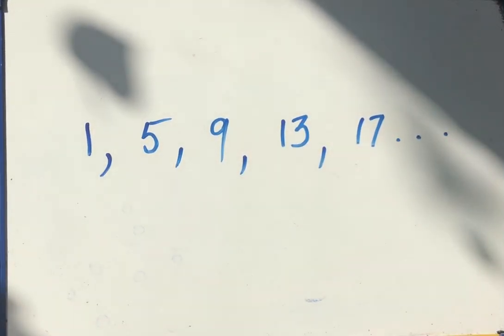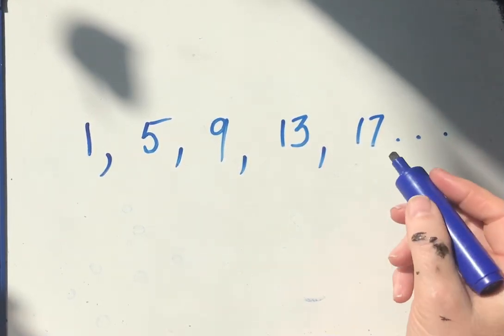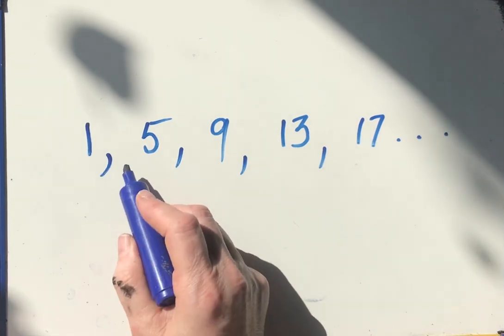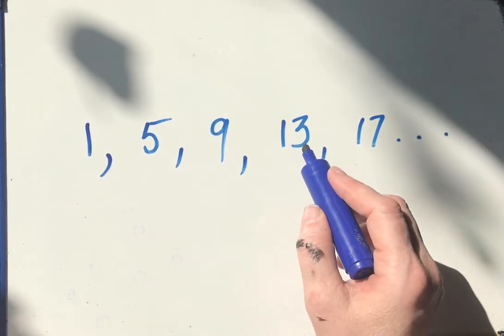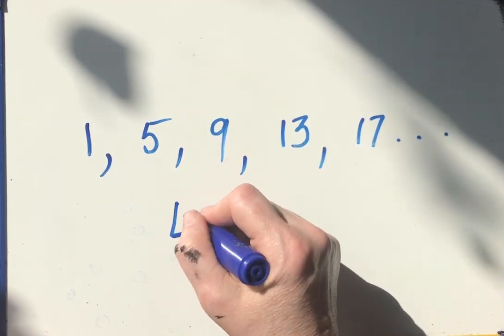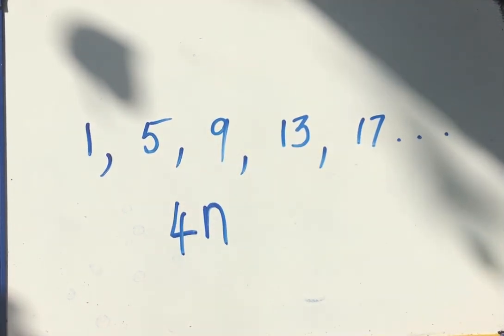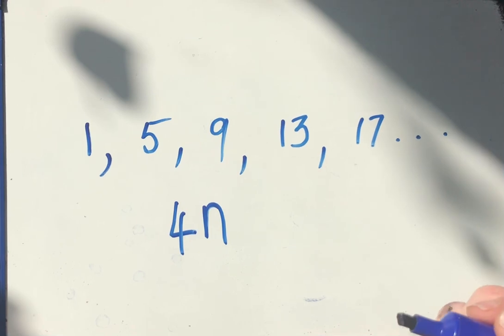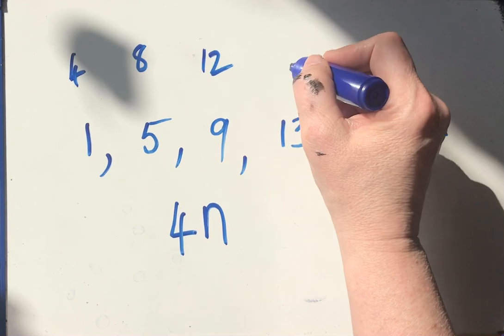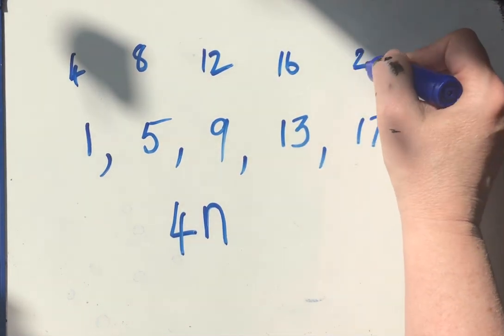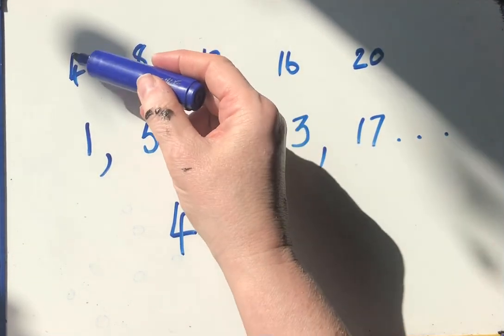So I've got to look at each term and I know that I'm going up in 4s. I have to add 4 to get to each term. 1 add 4 is 5, 5 add 4 is 9, 9 add 4 is 13. So it's the 4 times table again, but my 4 times table goes 4, 8, 12, 16, 20. So to get from 4 to 1, I have to take away 3.